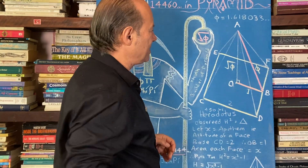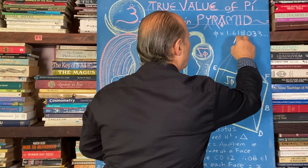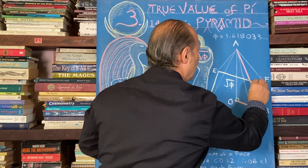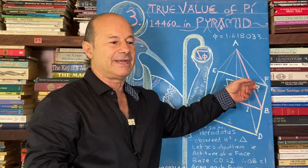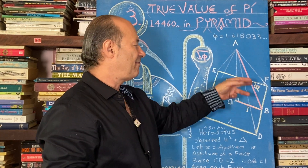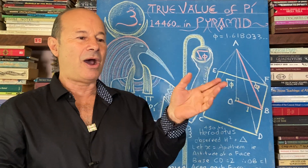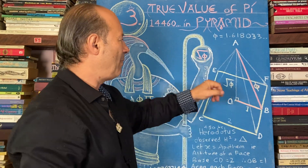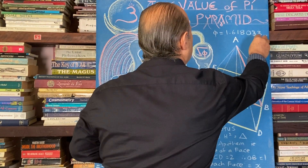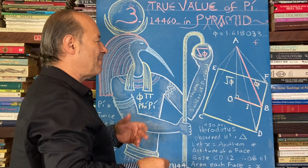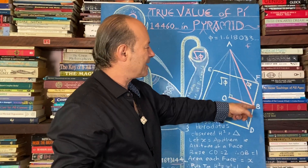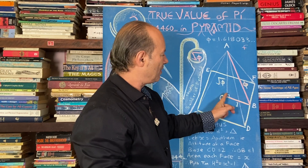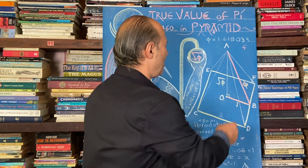So the slope height was Phi, equal to 1.618. This was the key: the ratio of this triangle in the center of the pyramid is 1 to 1.618. But we want to know what the height is — that's the critical factor, because to get the true value of Pi, we need to know exactly what the height of the pyramid is.